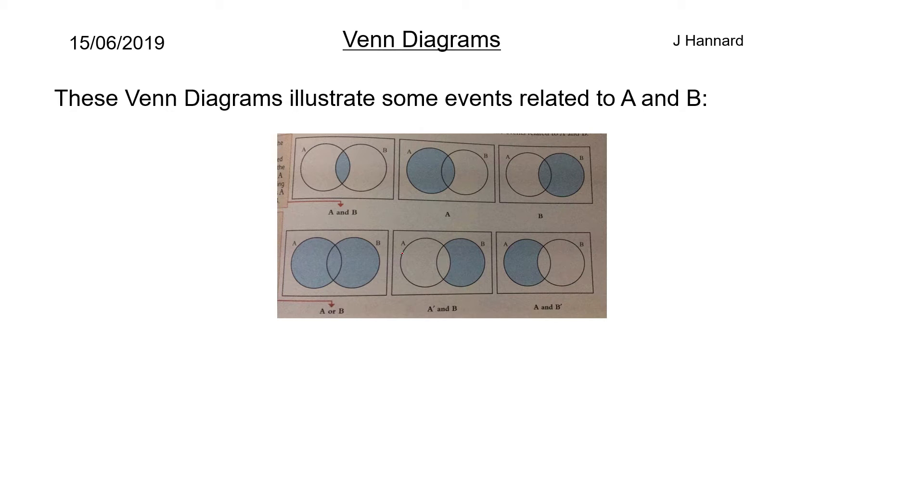A or B is the whole thing. A dash and B is just this little bit because remember this little bit includes A happening, so we just want the little bit of B there. A and B dash is just this little bit here.